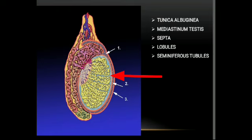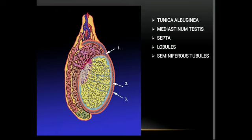The testis shows a thick connective tissue capsule called the tunica albuginea, which covers the testis. The posterior aspect of the tunica albuginea thickens and dips into the testis, forming the mediastinum testis. A thin connective tissue septum extends from the mediastinum into the substance of the testis, dividing it into several incomplete lobules. Each testis shows around 250 incomplete lobules called testicular lobules, and in each lobule we can see several highly coiled tubular structures called seminiferous tubules.